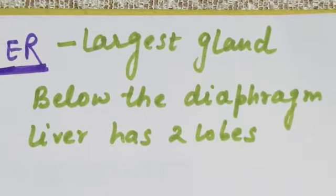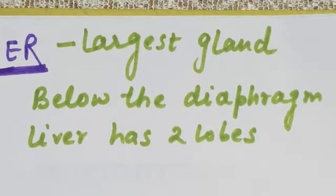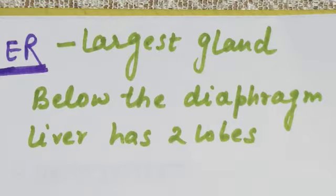The diaphragm separates two cavities — the chest (thoracic) cavity and the abdominal cavity. The diaphragm is a muscular structure between them.